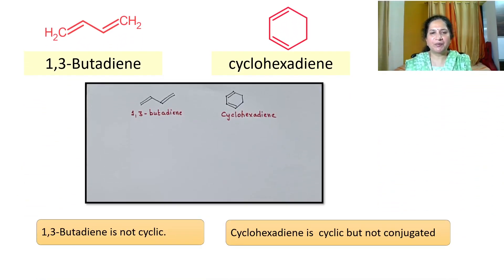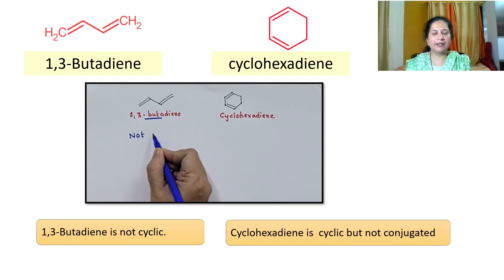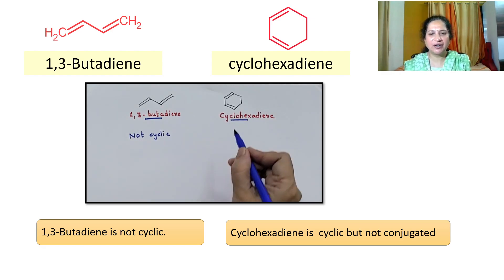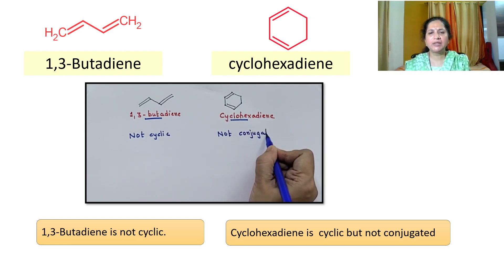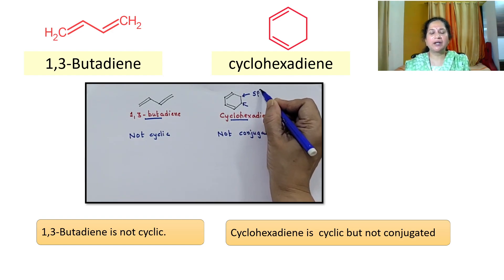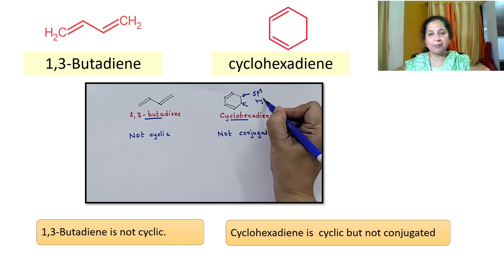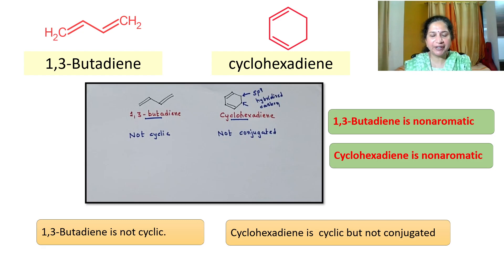Let us check two more compounds. First, consider 1,3-butadiene: as you can see, it is not cyclic, so the compound breaks one of the first three conditions. Second, in cyclohexadiene, conjugation is not complete — there are two carbons in sp3 hybridization. Since both compounds break one of the first three conditions, both 1,3-butadiene and cyclohexadiene are non-aromatic.